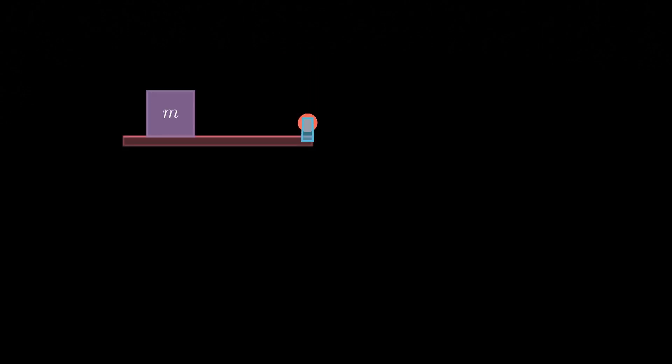To clarify this idea, let's take the example of an object with mass m resting on a rough surface. This object experiences a gravitational force, Mg, directed downward due to its weight. As a result of the object's weight pressing onto the surface, the table exerts an equal and opposite force on the object, which is typically denoted as N, or commonly referred to as the normal force.